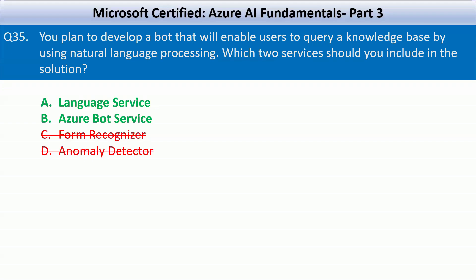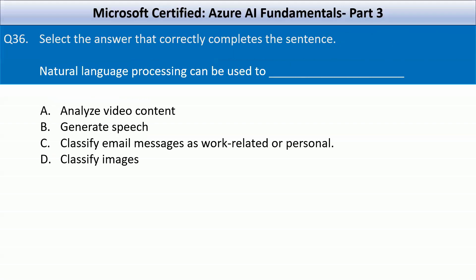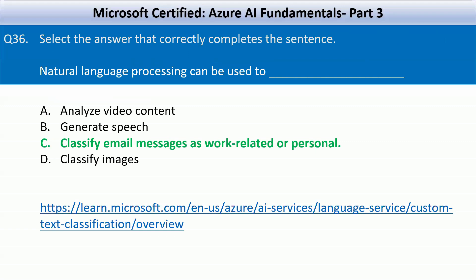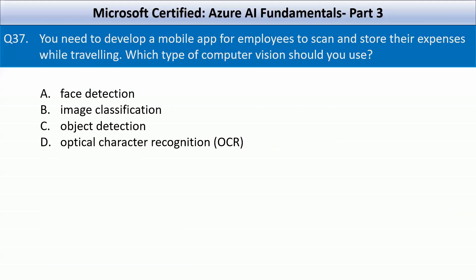Question number 36: Select the answer that correctly completes the sentence. Natural language processing can be used to — your options are analyze video content, generate speech, classify email messages as work-related or personal, or classify images. You can use NLP to classify email messages as work-related or personal. Analyzing video content is not correct because it typically involves computer vision techniques. Generating speech is more directly associated with speech synthesis. Classifying images is not correct because it typically involves image processing and computer vision techniques.